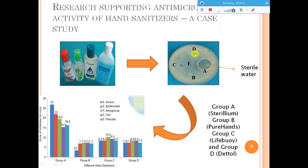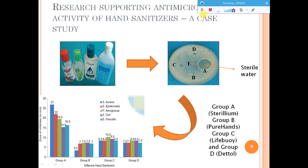Using a cork borer, wells were made within the plates, and equal amounts of each hand sanitizer — maybe 25 or 50 microliters — were loaded into the wells. Sterile water was added to well E as a control. A clearance zone around the well indicates antimicrobial activity against the organism. The larger the inhibition zone, the higher the antimicrobial potential. From this study, Sterileum (A) has the highest antimicrobial capacity compared to the other hand sanitizers tested.